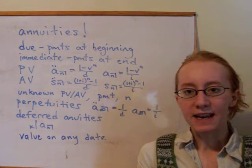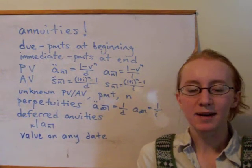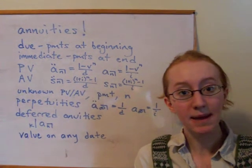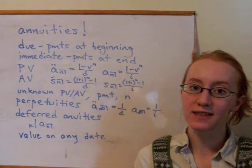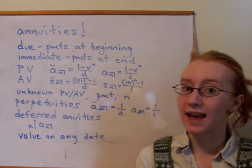Then on Friday we looked at deferred annuities, which is where the payments don't actually begin until sometime in the future. So there are still n payments, but the first one of them occurs at time k. And the last one of them occurs at time n plus k minus 1.